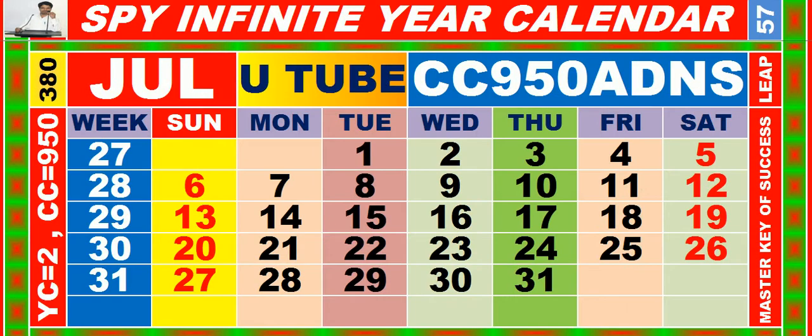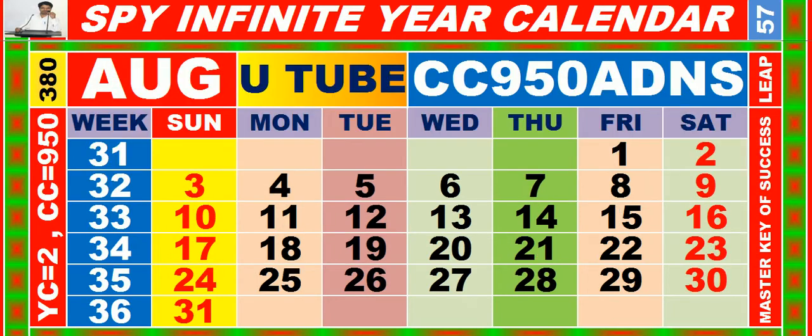Calendar for the month of July having calendar code equal to 950. Calendar for the month of August having calendar code equal to 950.